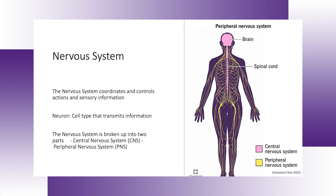First, I'm going to talk about what the nervous system is. The nervous system coordinates and controls actions through sensory information. We're going to talk about afferent neurons later. The neuron is a type of cell that transmits and processes this information.